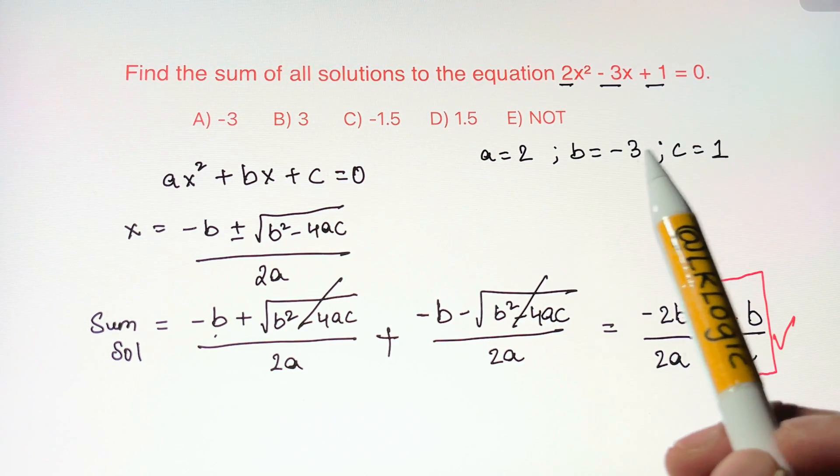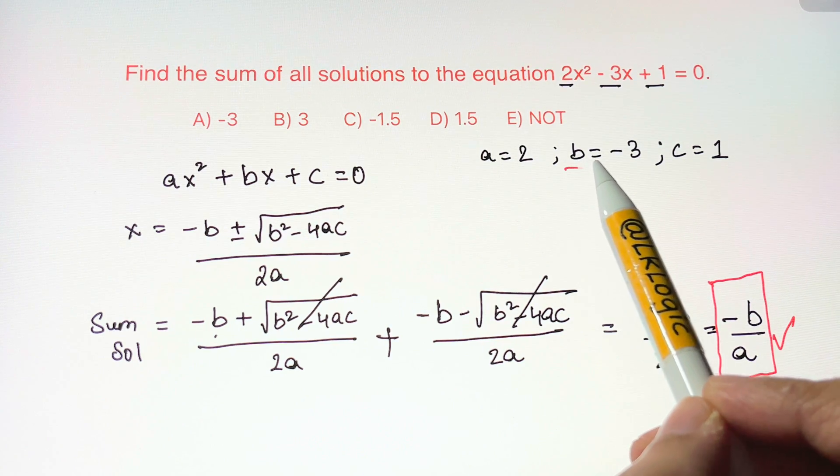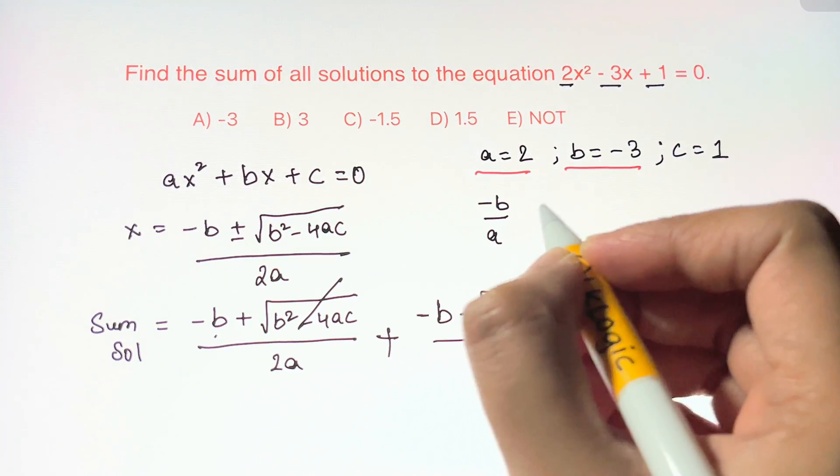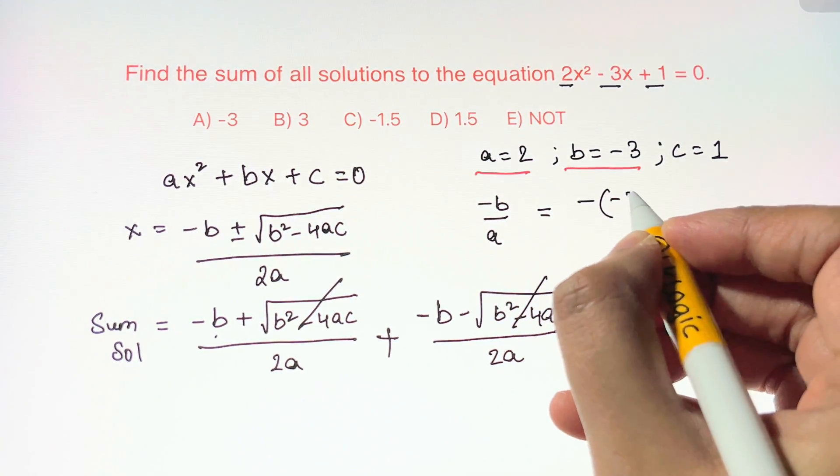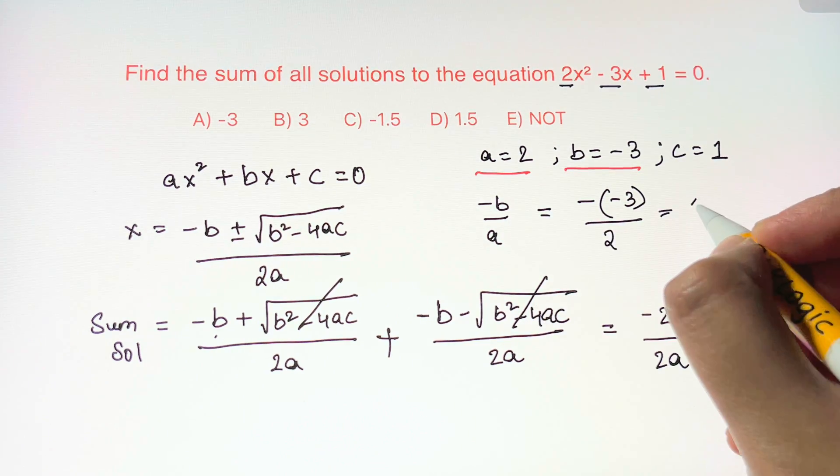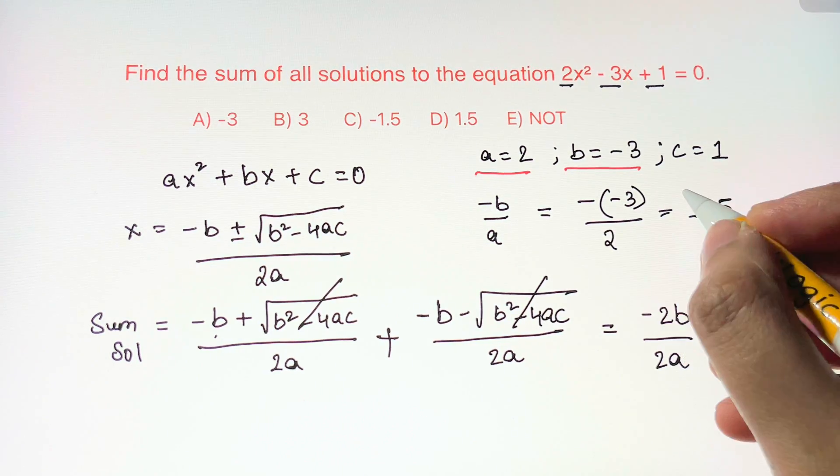For the equation of the problem we have b = -3 and a = 2. So it will be -(-3)/2. That's positive 3/2 which is equal to 1.5.